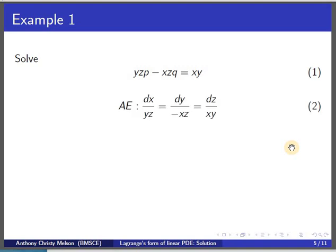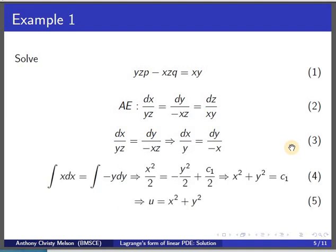To illustrate, we take the example yz·p minus xz·q equal to xy. The auxiliary equation is dx/yz equal to dy/(−xz) equal to dz/(xy). Comparing with the standard form gives capital Q as minus xz. We can choose the pair with dx and dy, which results in the elimination of z, allowing us to separate variables and integrate to get x² + y² equal to c1, so u equals x² + y².